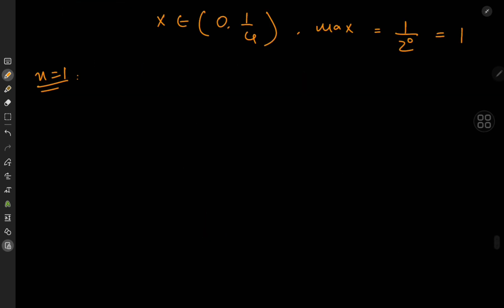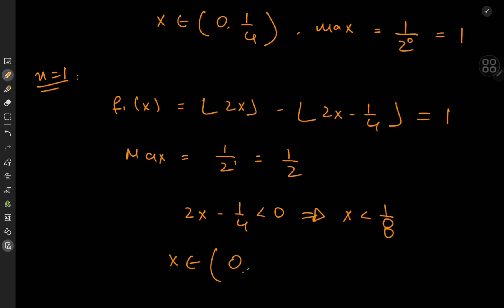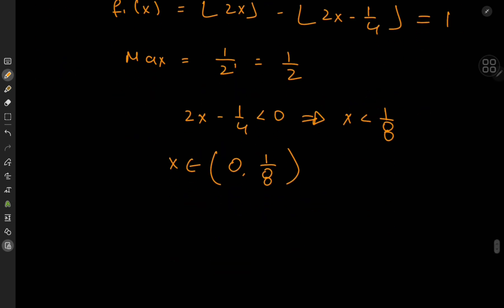For n=1 the case gets more interesting. f_1(x) equals floor(2x) minus floor(2x minus a quarter), and we want this to equal 1, which yields a max integrand value of 1 by 2. One option is the first floor function returning 0 and the second returning -1. That's possible when 2x minus a quarter is less than 0, giving x less than 1/8. So x could be in [0, 1/8], but the max integrand there is 1/2.